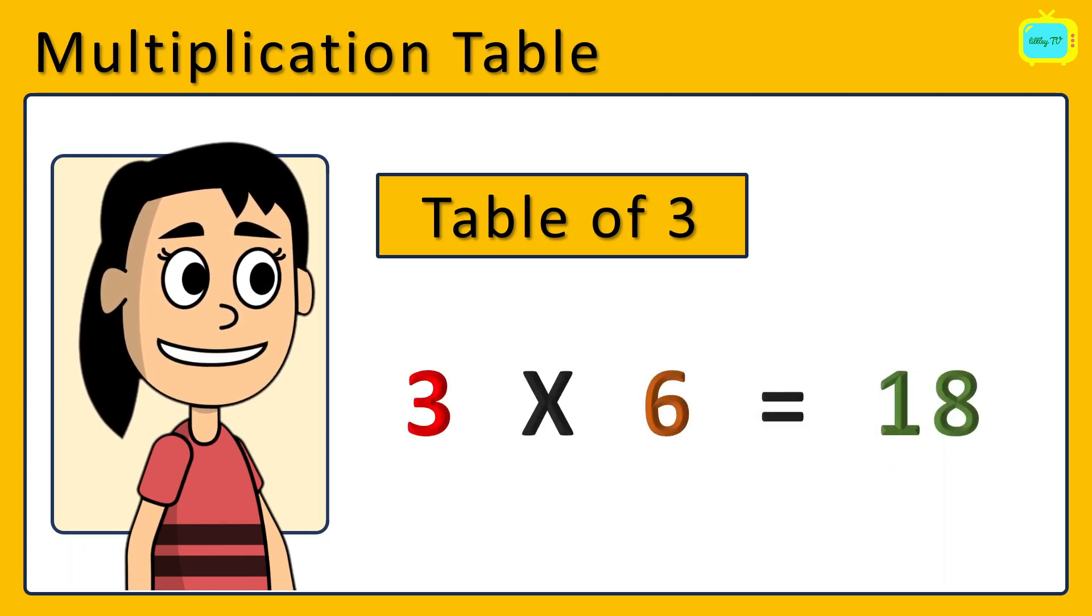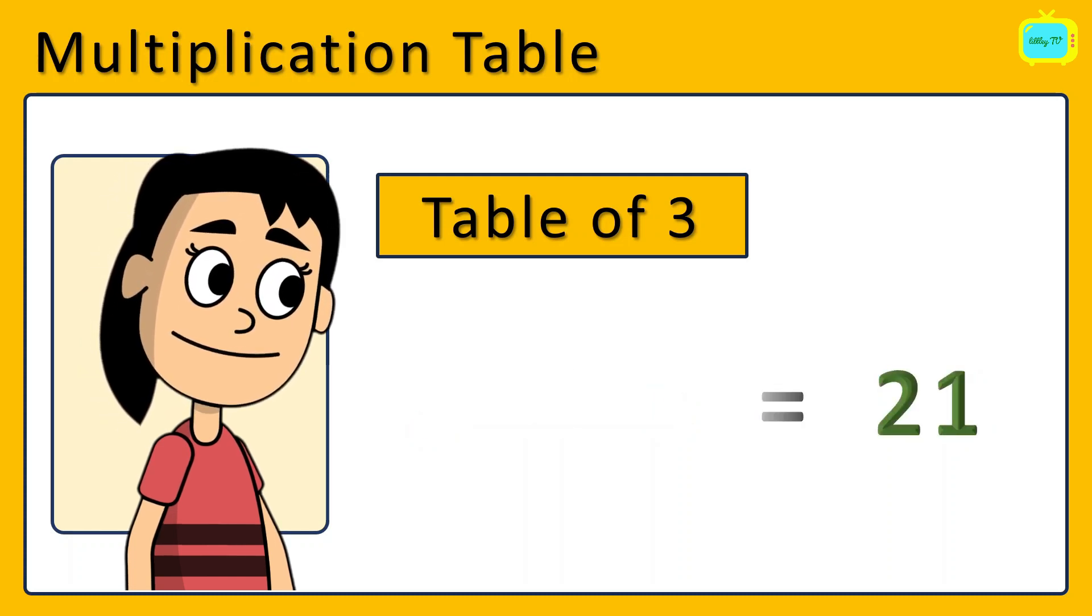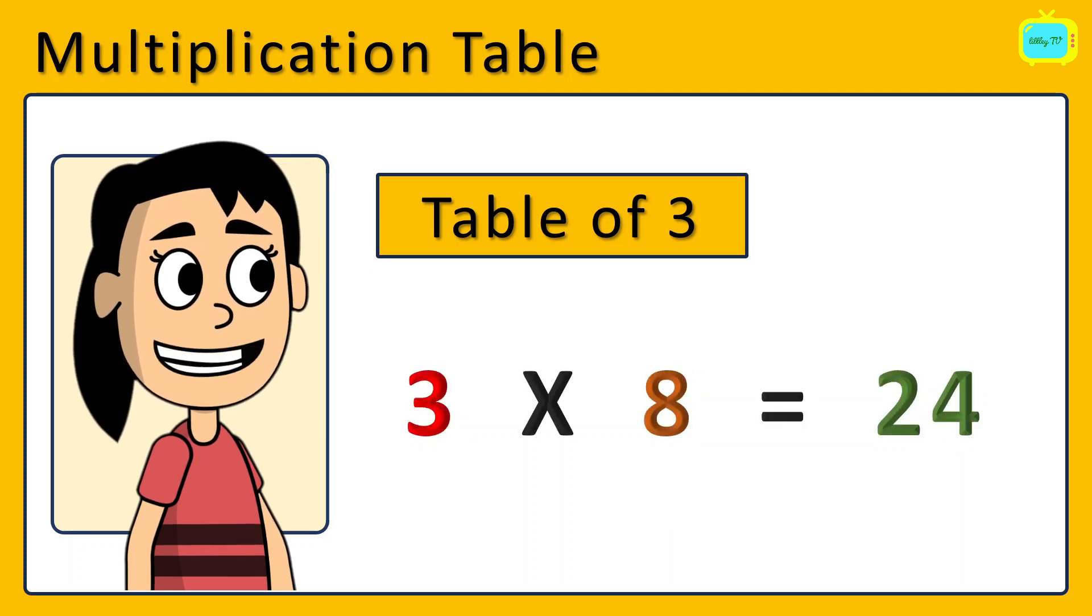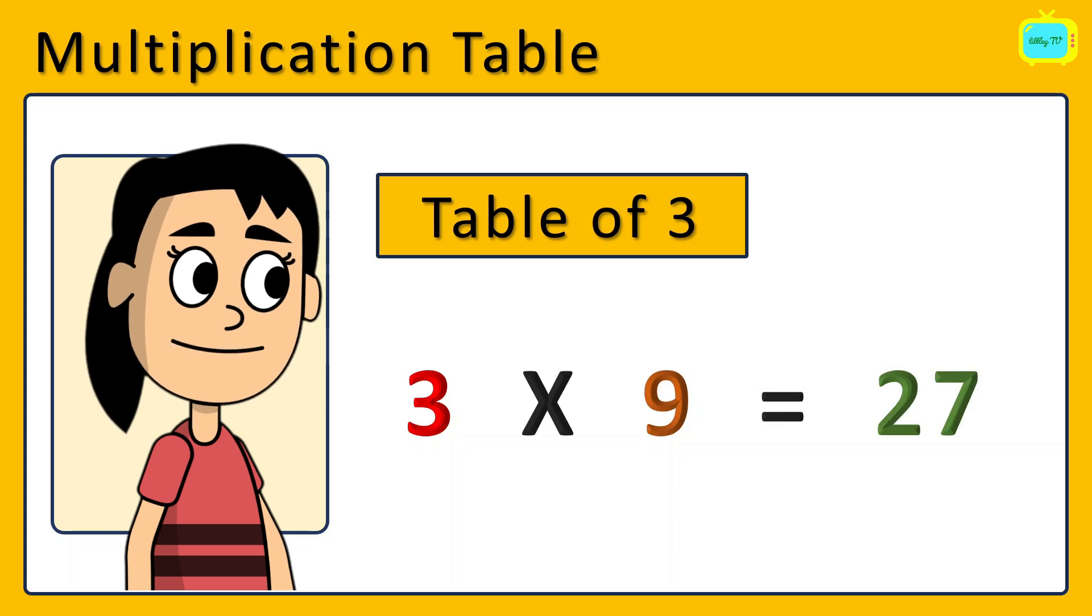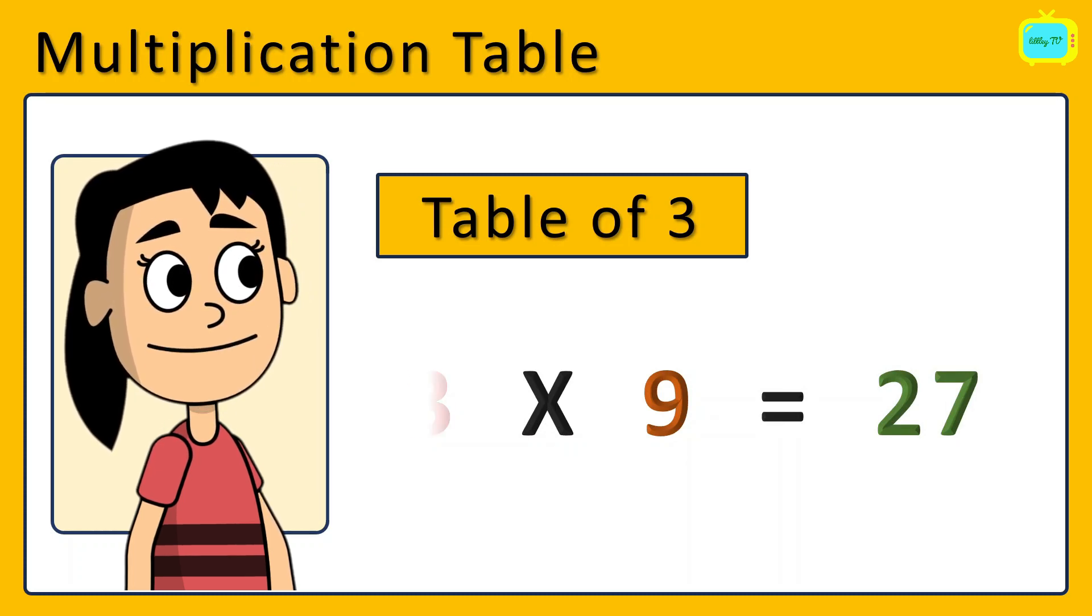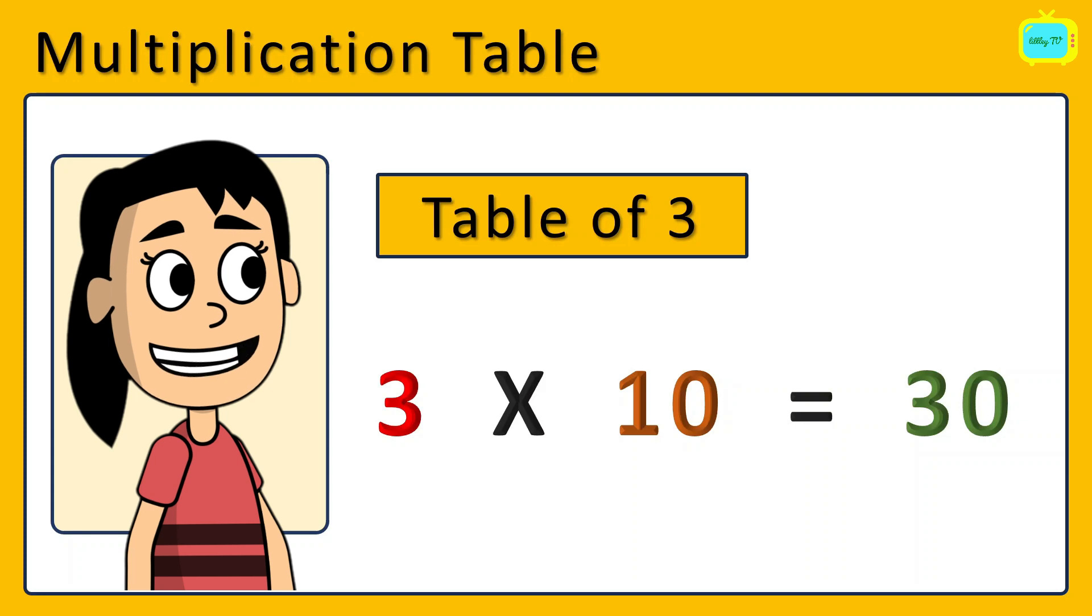3 times 6 is 18. 3 times 7 is 21. 3 times 8 is 24. 3 times 9 is 27. 3 times 10 is 30.